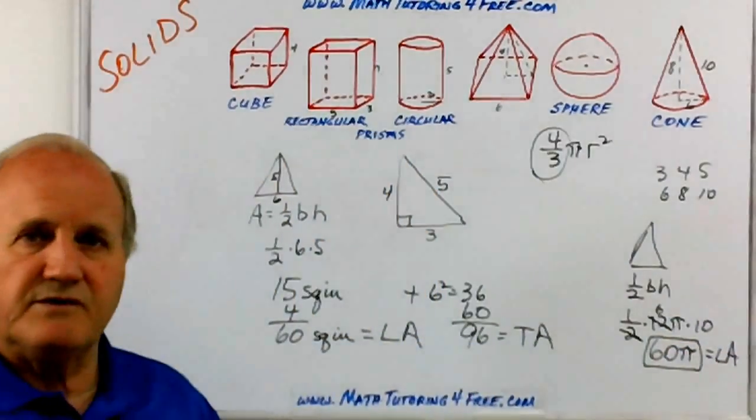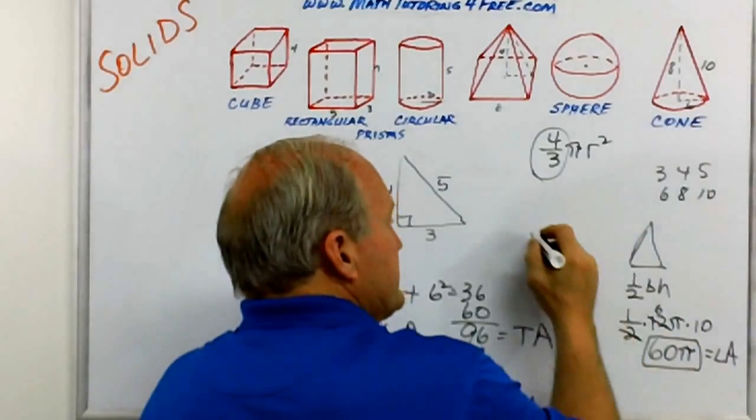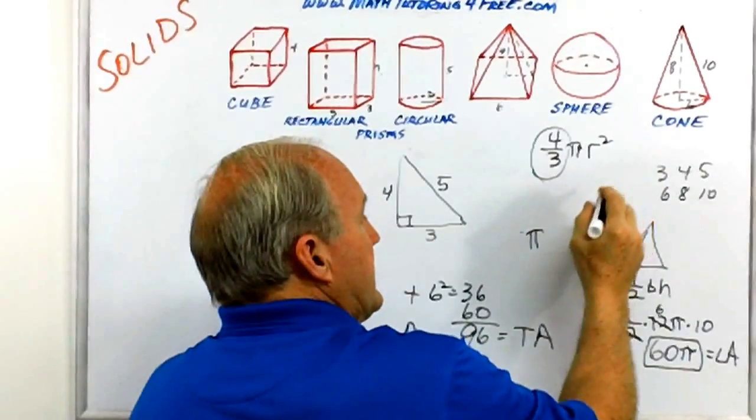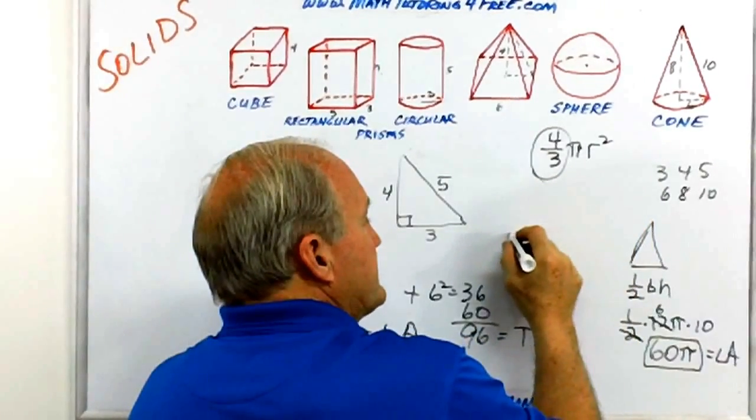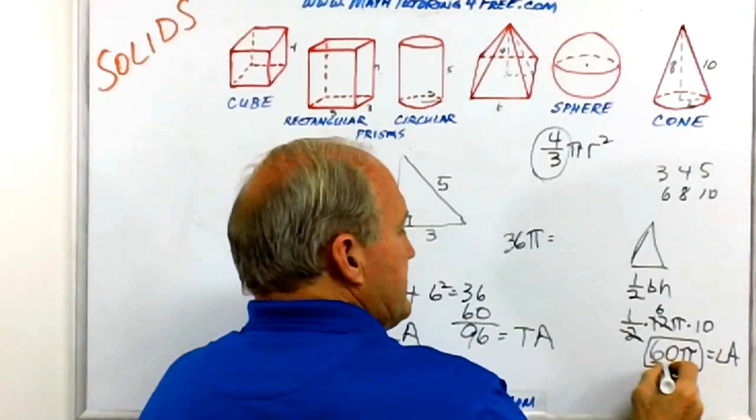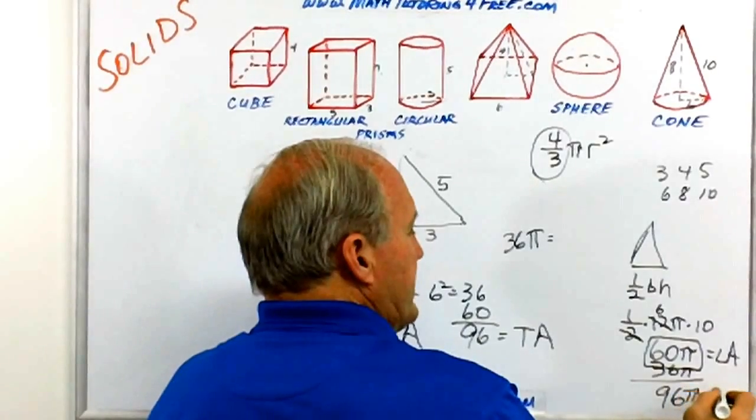If we want the total area, all we do is add the base. The base is pi r squared. r in this case is six, so the square is 36. So the area of the base is 36, we add 36, and our total area then is 96 pi.